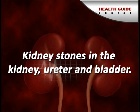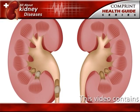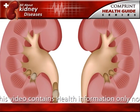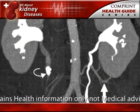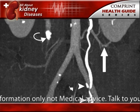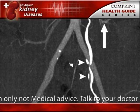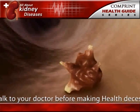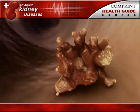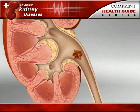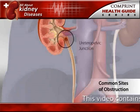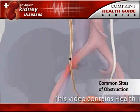Kidney stones can occur in the kidney, ureter, and bladder. Urolithiasis is the medical term used to describe stones occurring in the urinary tract. Other frequently used terms are urinary tract stone disease and nephrolithiasis. Doctors also use terms that describe the location of the stone in the urinary tract — for example, a ureteral stone or ureterolithiasis is a kidney stone found in the ureter.